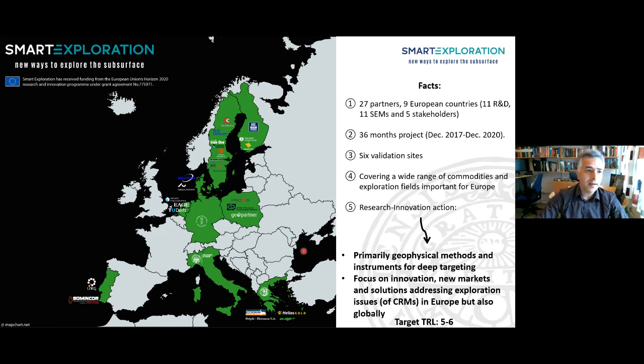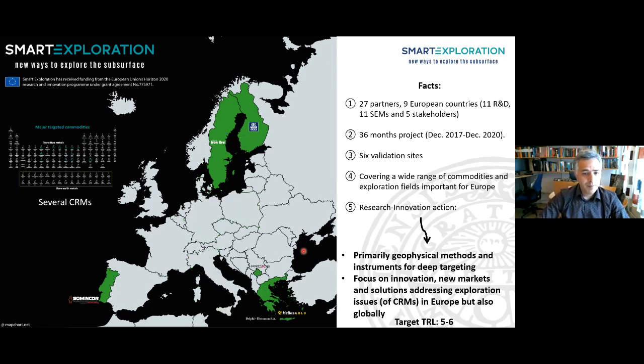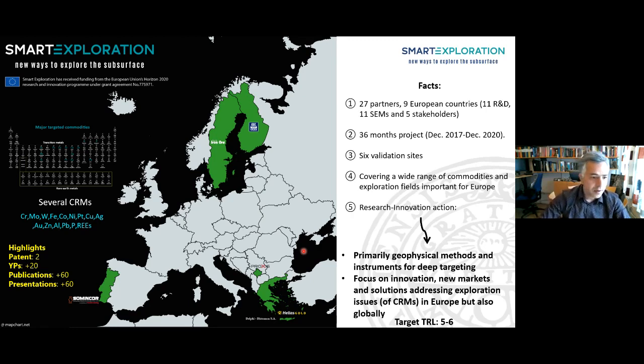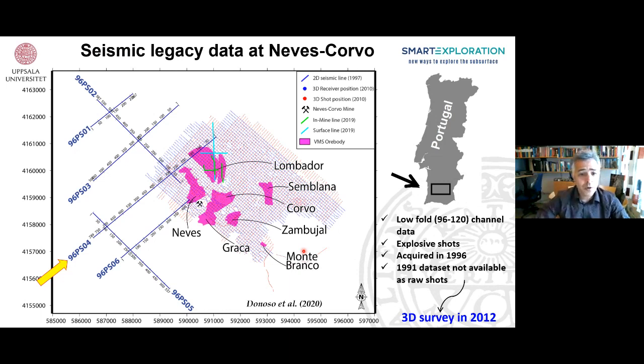11 research institutions, 11 SMEs, high-tech companies, and six mining companies. And we have EAG valid for dissemination and communication of results. Our idea in this case is to innovate and get things into market. The primary targets are critical raw materials. And the project is pretty successful. And we're happy that we recently won an award for the project. Let's look at two examples. Europe back then was not behind. In 1996, Somincor in Portugal collected seismic data, 2D seismic data. These were acquired later 3D.